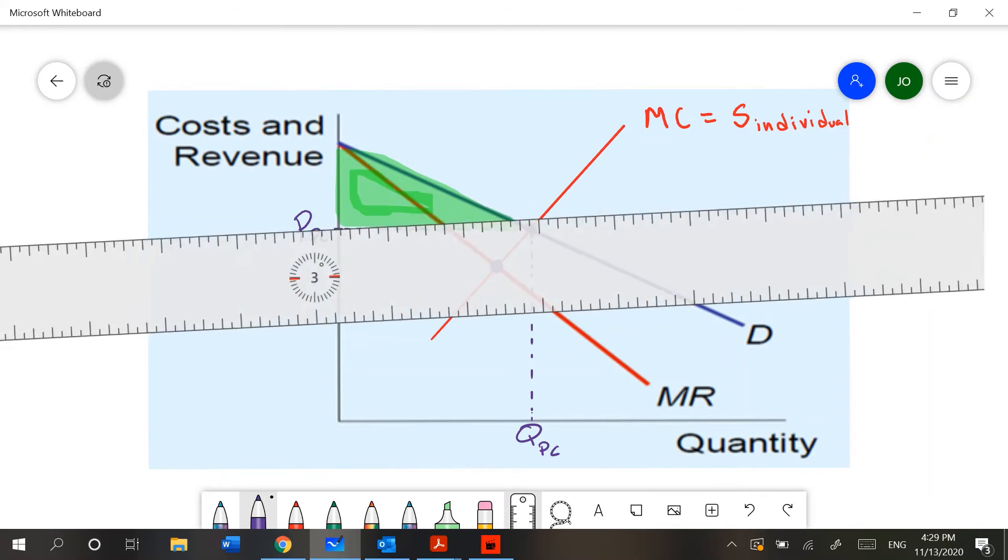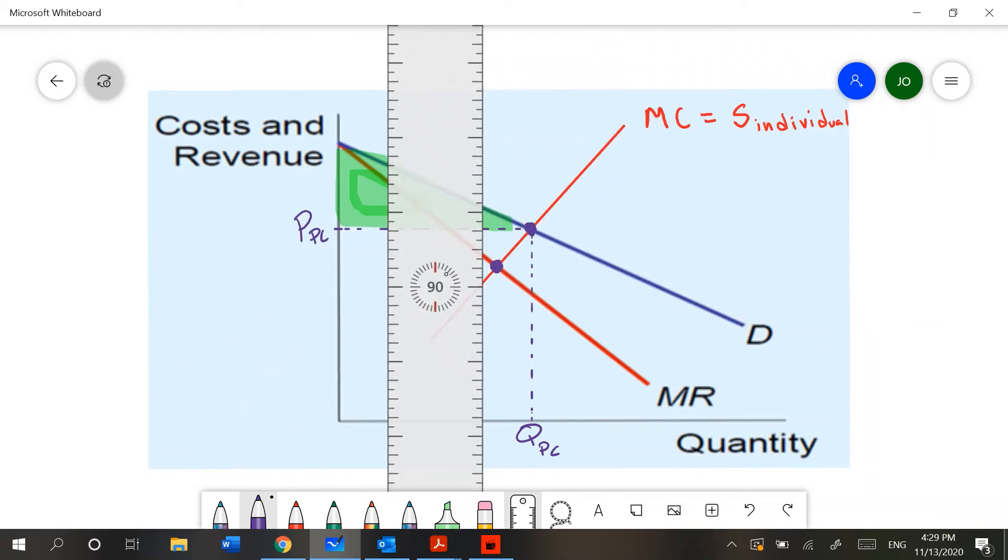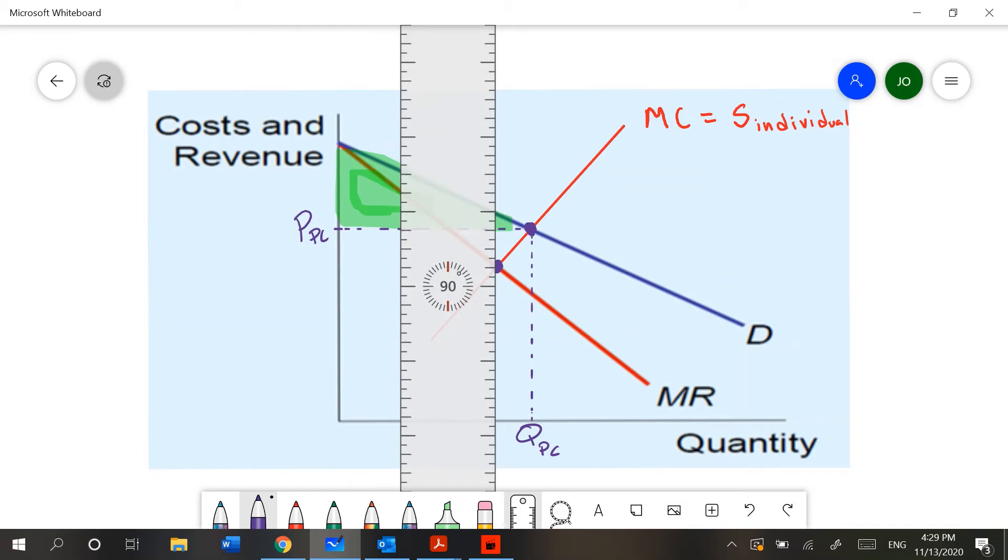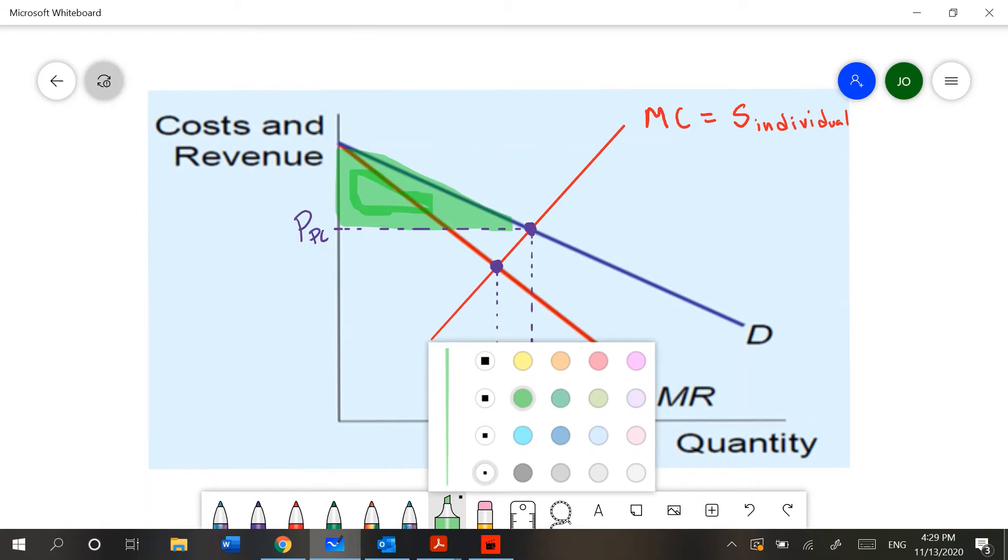Therefore, we are able to figure out how much the individual monopoly will produce in this market. Hence, we see our first problem with a monopoly. Under a monopoly, we see less production.